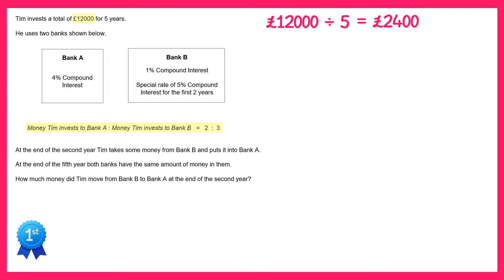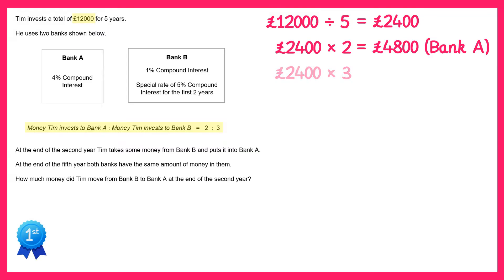Now we invest two parts into Bank A, so 2,400 times two is 4,800, and three parts into Bank B, so 2,400 times three is 7,200. So we now know that £4,800 goes into Bank A and £7,200 goes into Bank B.